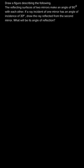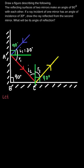First we'll draw the figure as described. Here we can see the first mirror and the second mirror — the first mirror is at 90 degrees to the second mirror. The green line represents the normal of each mirror. The incident ray strikes the first mirror at an angle of 30 degrees.